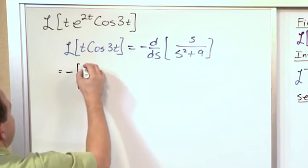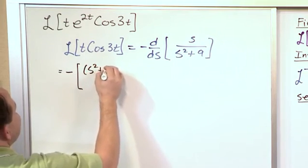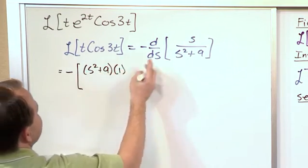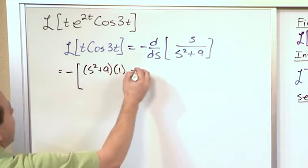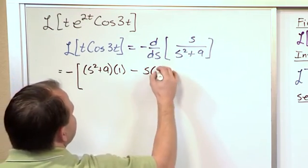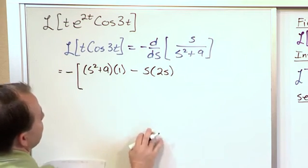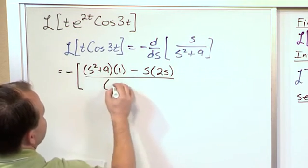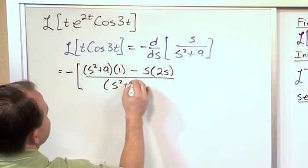So we have the bottom, which is s squared plus 9 times the derivative of the top, which is just 1, minus the top times the derivative of the bottom, which is just 2s, over the bottom squared, s squared plus 9 squared. So far this looks kind of ugly. Let's simplify it and hope that it gets a little bit better.